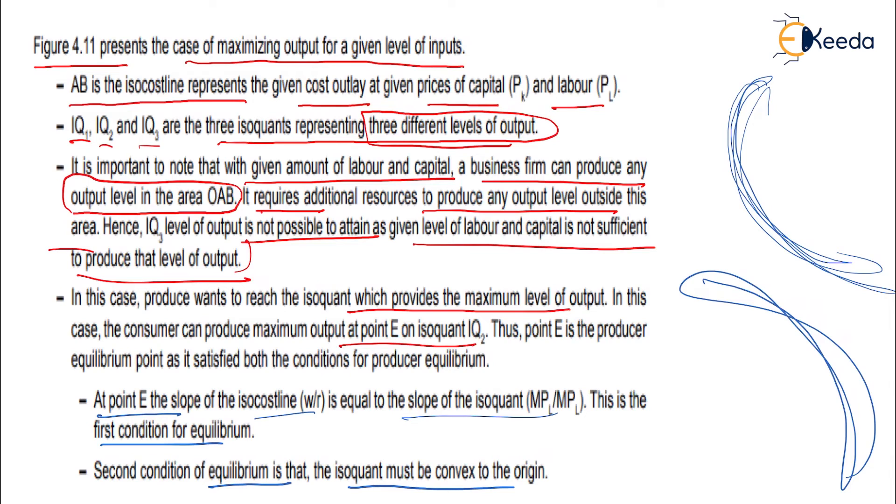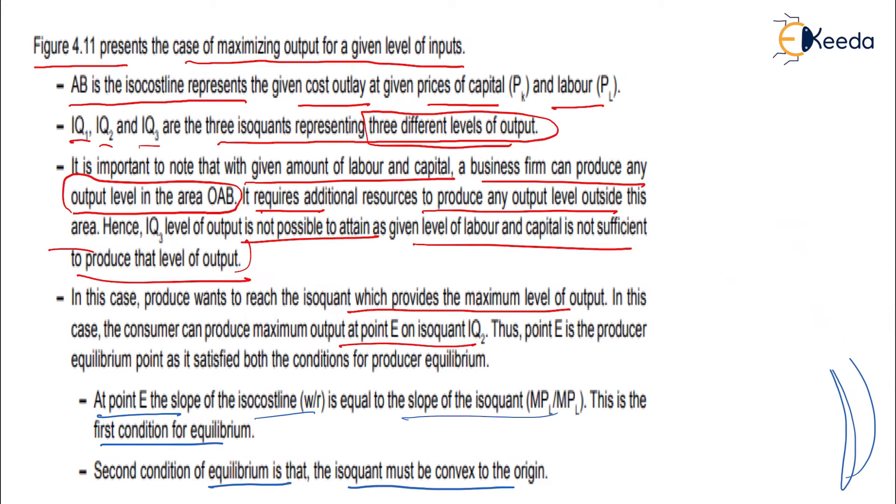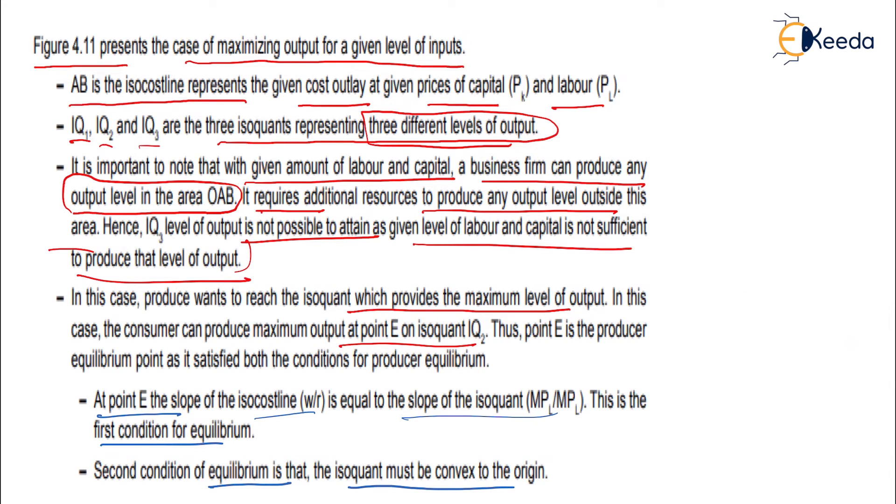At point E, the slope of the iso-cost line is equal to the slope of the isoquant — this is where the isoquant curve is tangent to the iso-cost line. The second condition of equilibrium is that the isoquant must be convex to the origin. This curve being convex in shape confirms it satisfies the equilibrium condition.